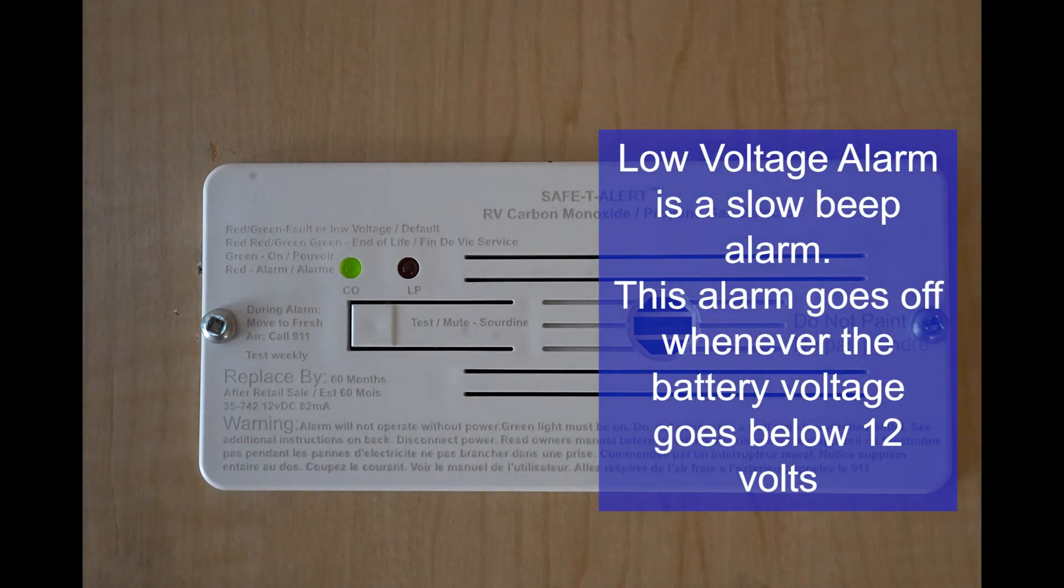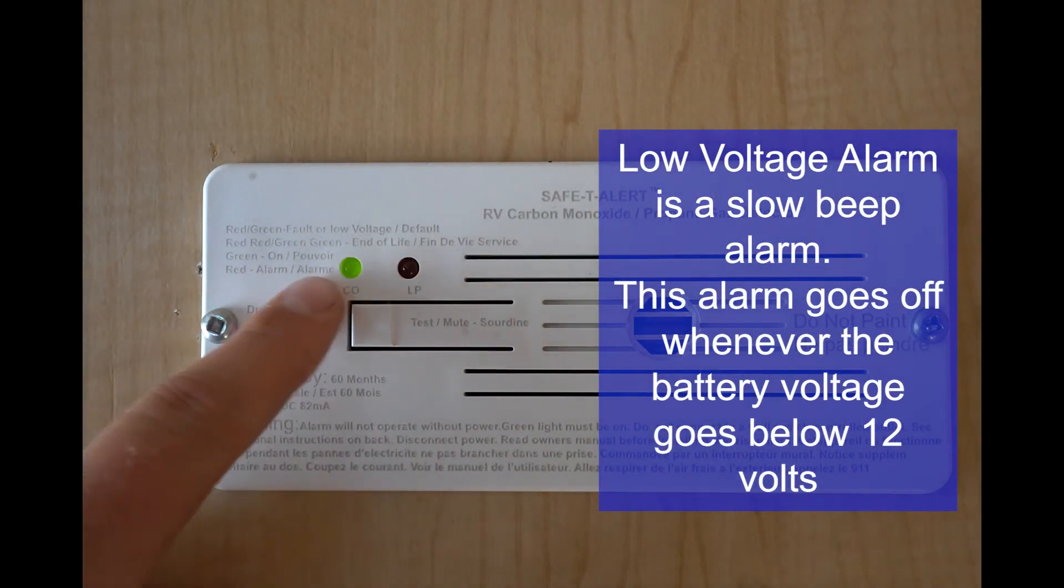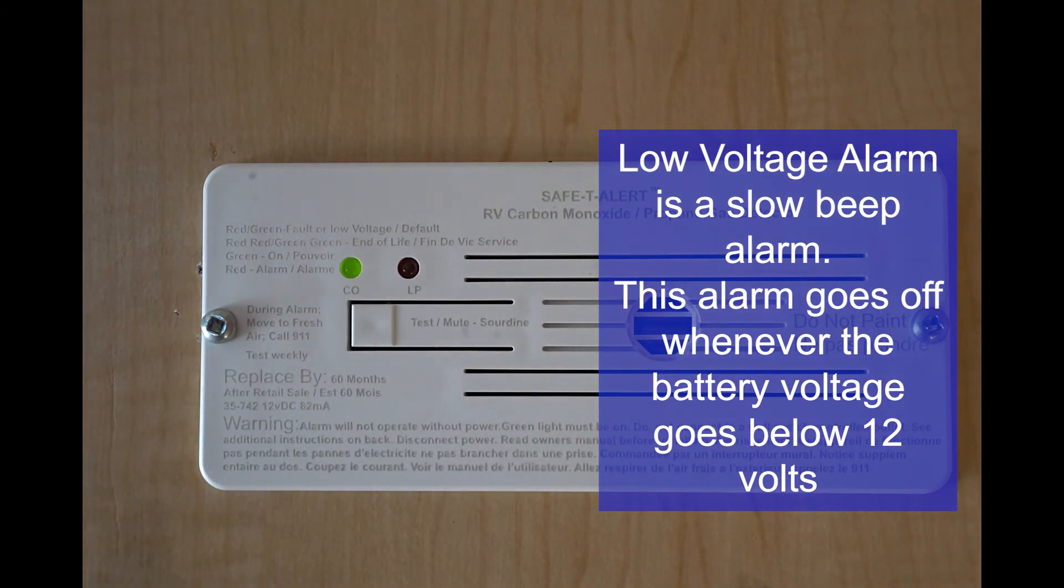The last one is your low voltage alarm. There is no indicator on the low voltage alarm. You'll see what your battery voltage is at on your breaker panel or inverter panel. Anything below 12 volts, that low voltage alarm is going to start going off.